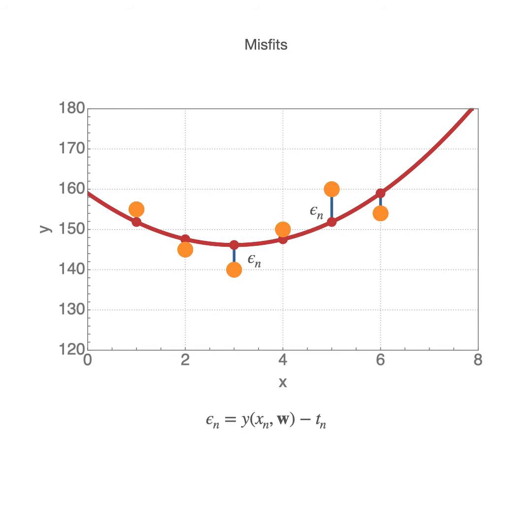Let's look again at the misfits. The misfits are the distances between the model function and the target values and are the short blue line segments. For a Bayesian analysis the misfits must be expressed as a probability, namely the probability of finding the misfit of a given size epsilon.